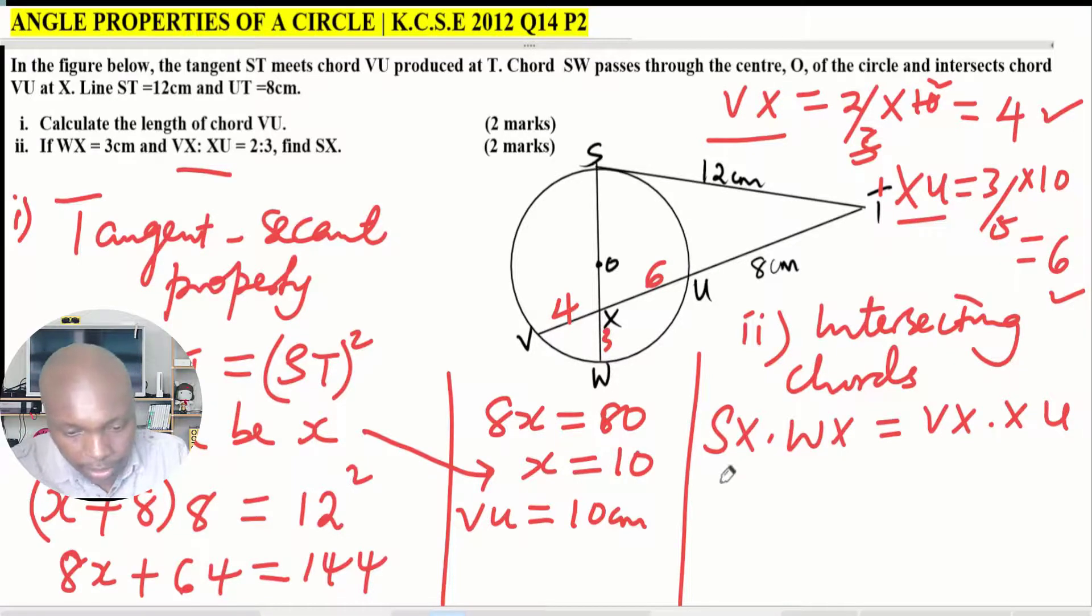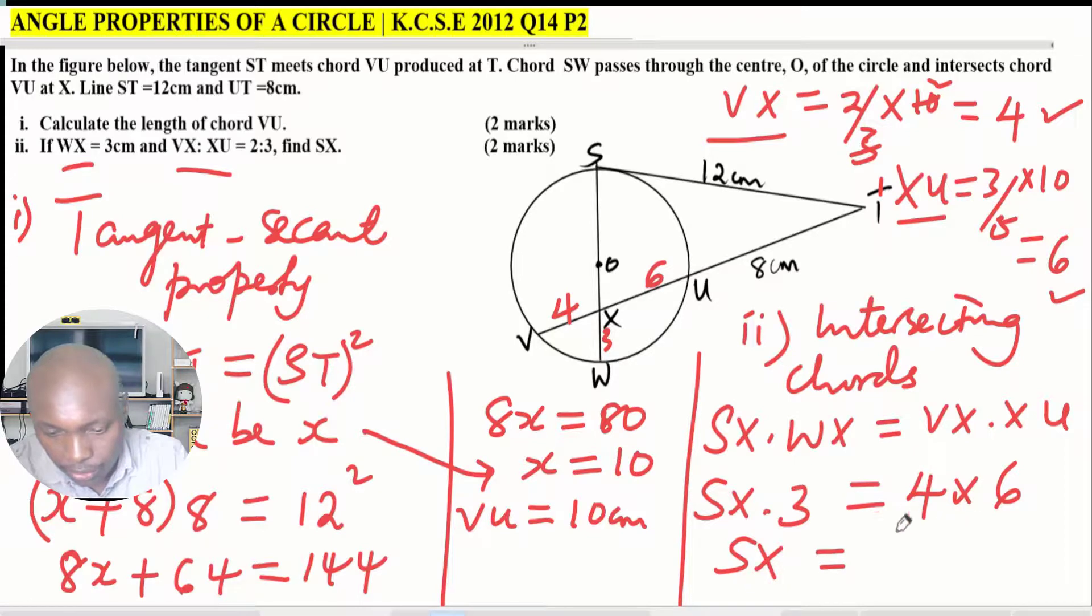Now we can write SX, which we don't have, multiplied by WX, which is given as 3, equals VX, which is 4, multiplied by XU, which is 6. This should give us the value of SX. To get SX, we simply need to take 4 multiplied by 6 divided by 3, and this should give 8 centimeters.